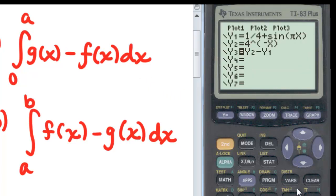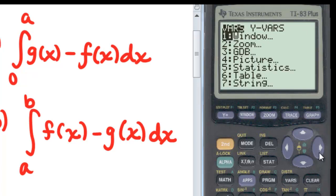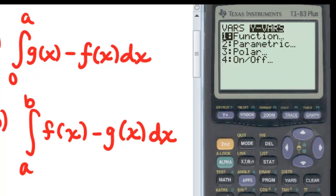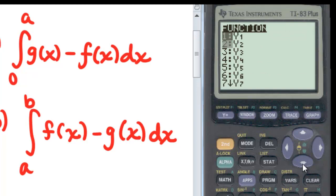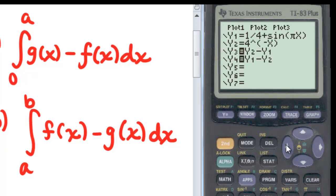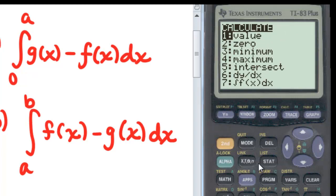Now I'm going to do my Y4. I'm going to go vars, Y vars function. This time I'm going to do Y1 minus Y vars function Y2. And I'm going to go back up to the equal sign in Y3 and turn it off, so I'm only plotting the difference in the F and the G function. And go second and trace down to 7 for integral.